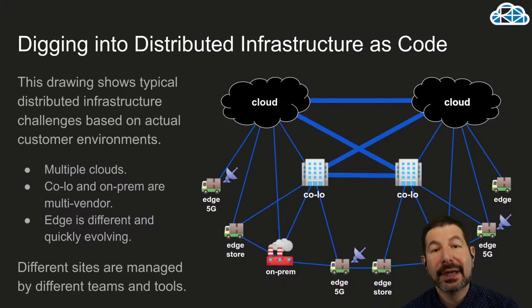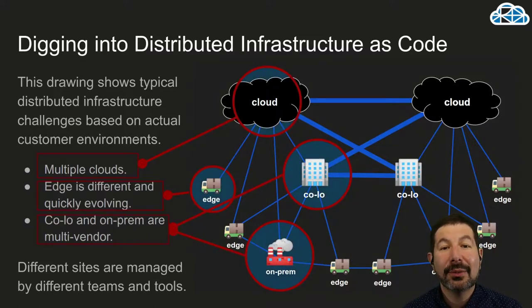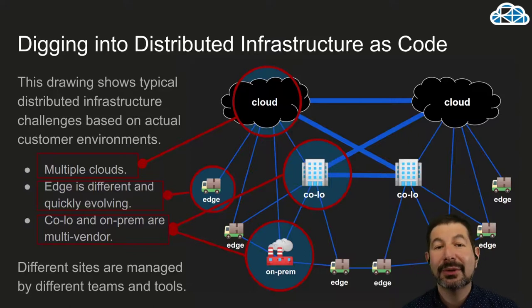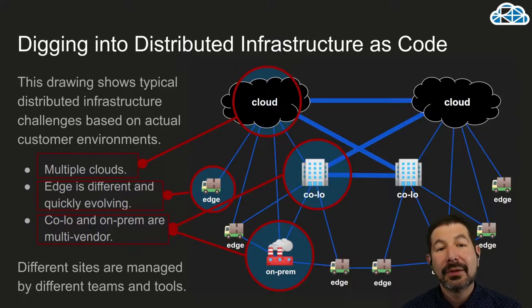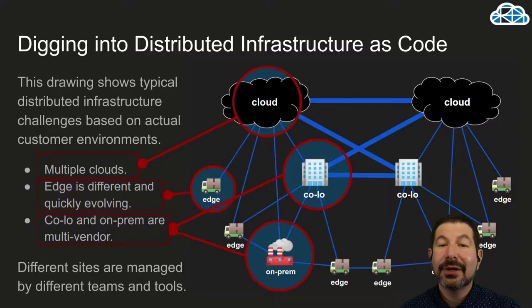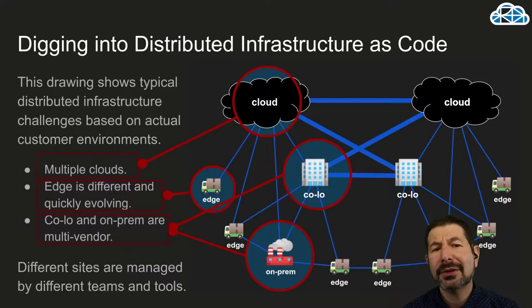Let me take you through what we're doing. I'm going to use this drawing quite a bit over the next couple of slides, so I want to make sure it's clear what we're explaining. This drawing has multiple clouds in it. It has edge infrastructure, which is different than cloud — it has different hardware requirements and data centers quickly evolving. It shows colo and on-prem data centers in the mix; RackN's specialty is colo and on-prem. All of this infrastructure is capable of being automated with Digital Rebar using our infrastructure as code methodologies. Generally, we know that different sites are managed by different teams and tools, and that has created a significant management challenge where teams don't get to share and collaborate. We're aiming to change this as part of the RackN success cycle.